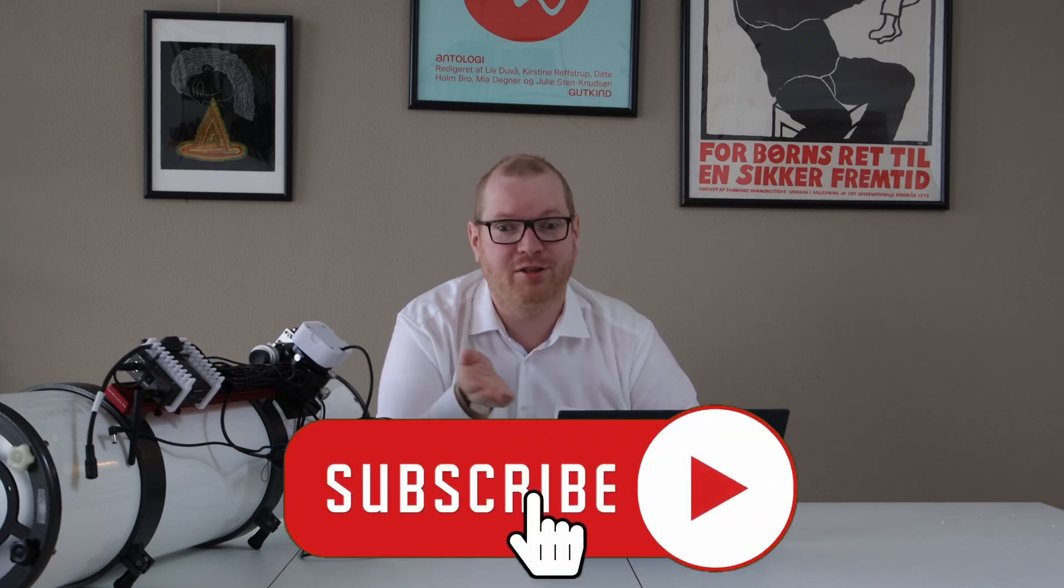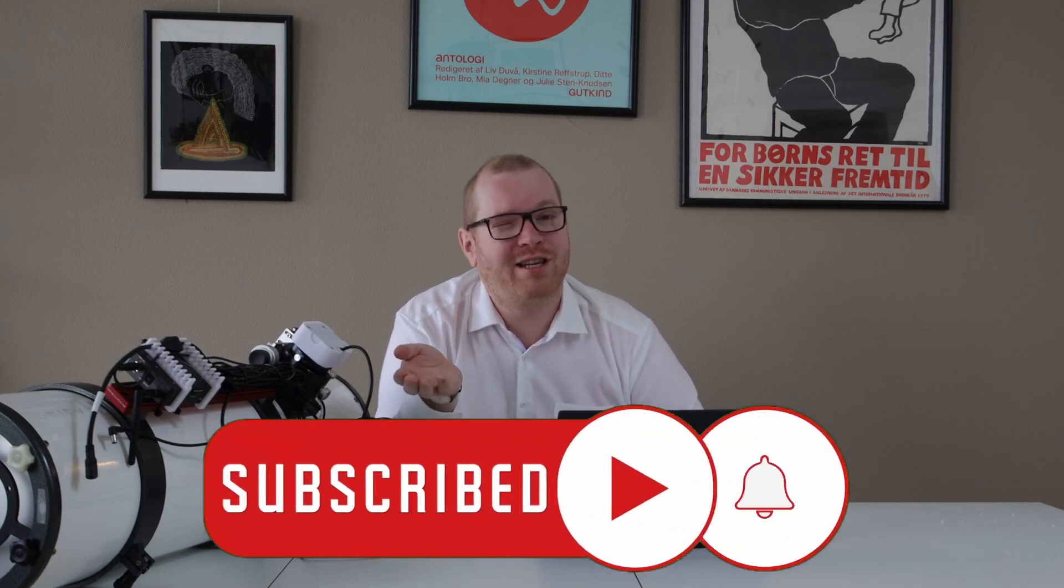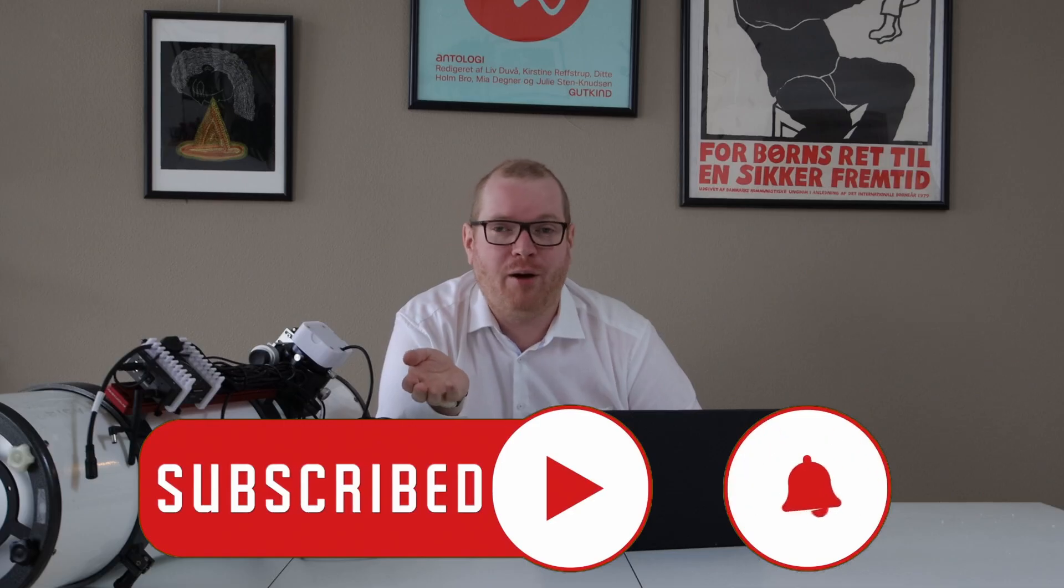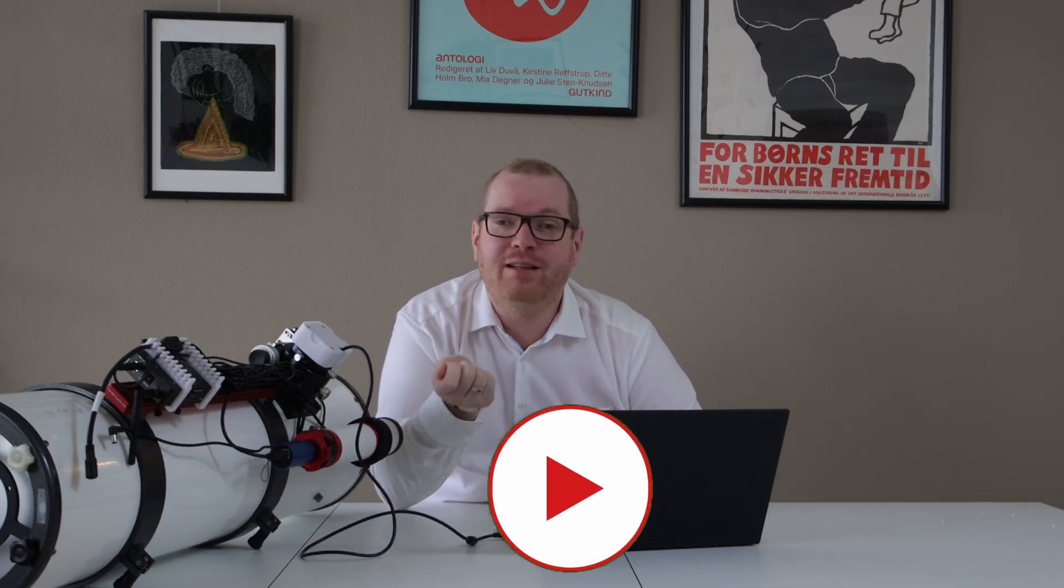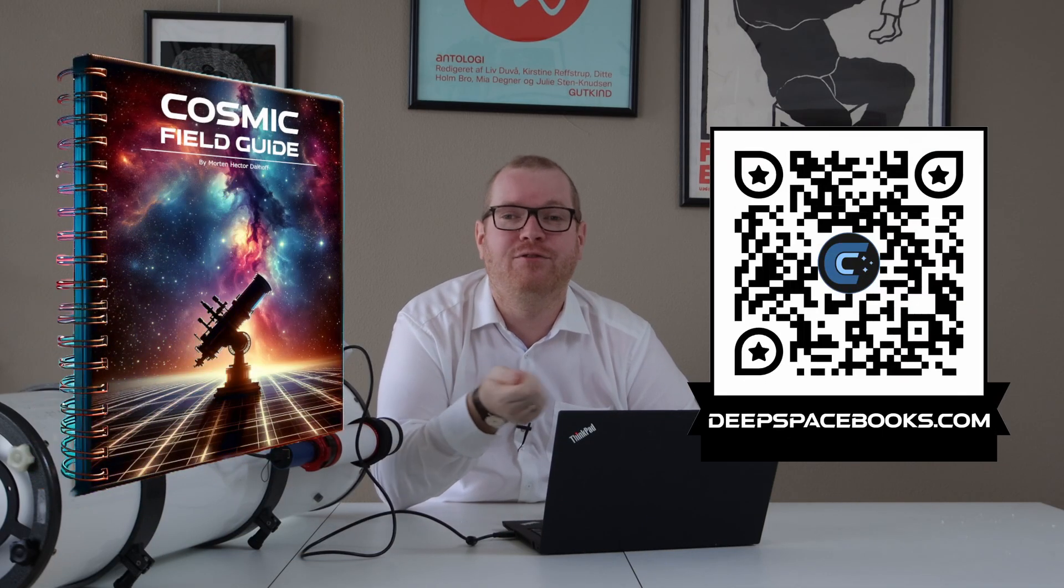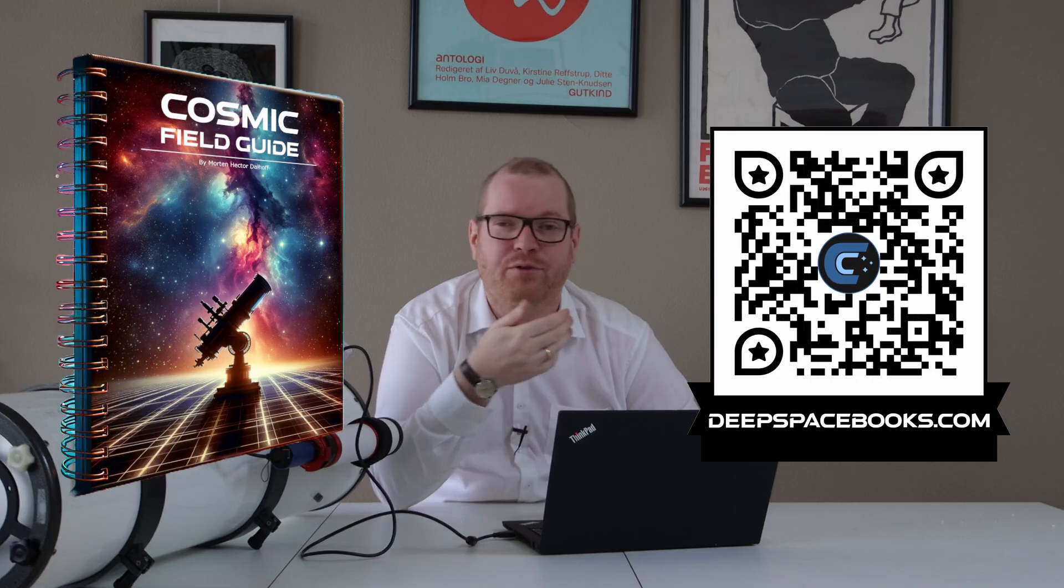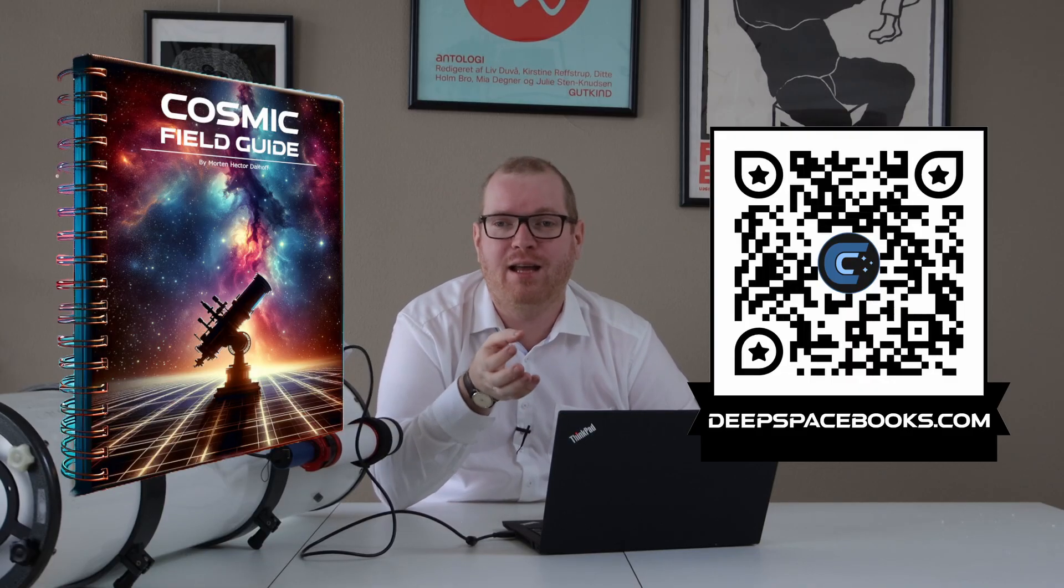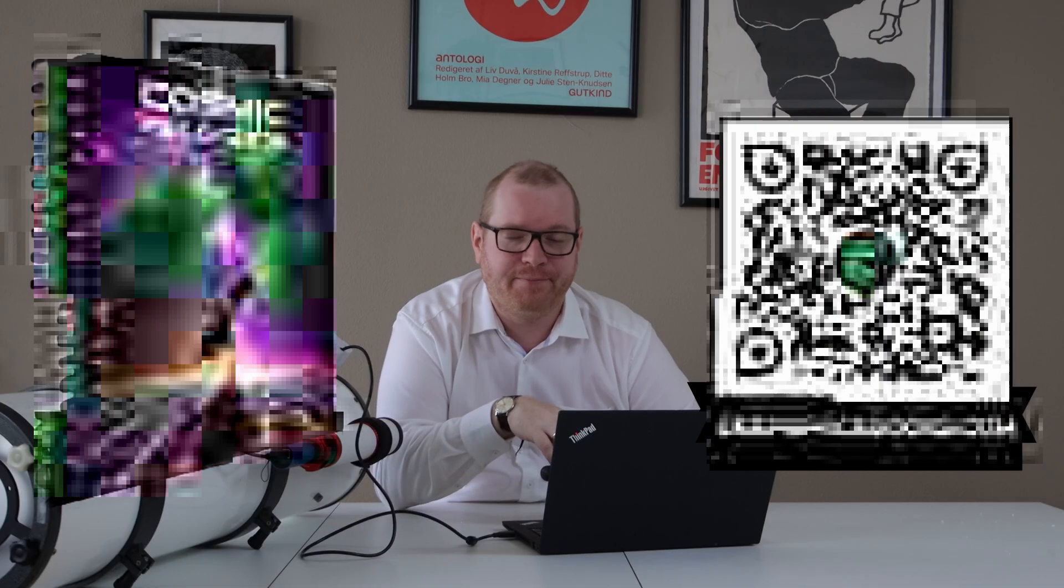If you found this video interesting or fun, then there's a number of things you can do to help me out. You can just go and click the like button, or if you really like, you can click the subscribe button. You can also go and check out my book on deepspacebooks.com. This is a field guide, a handbook for astrophotographers to take with you out in the field with loads of useful graphs and tables and stuff where you can fill out your own information, so you have all that information at hand when you're out there in the black. Check everything out in the description below.